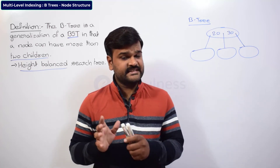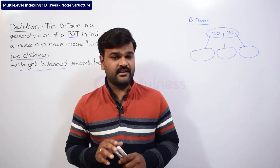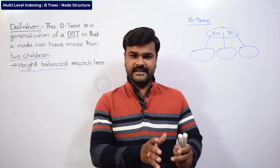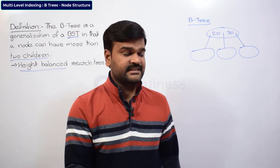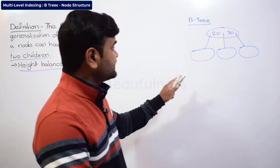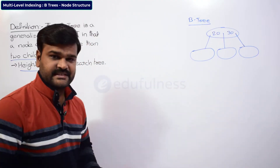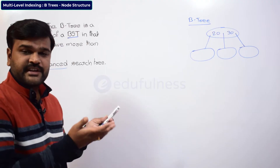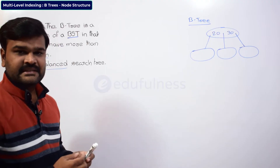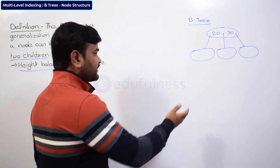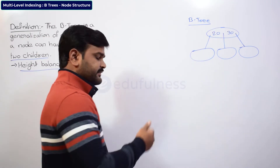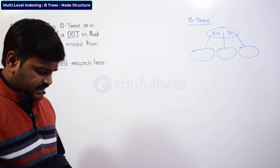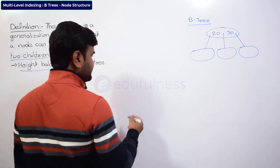Now, based on this simple understanding of binary trees, let us try to concentrate more on B-trees. So how one node structure is going to be there — from this only we can define its structure. Let us try to understand.